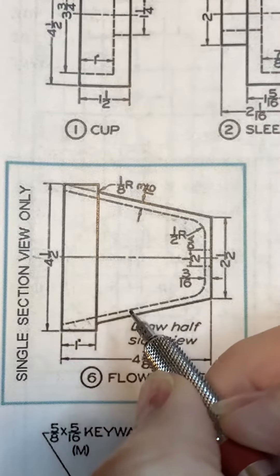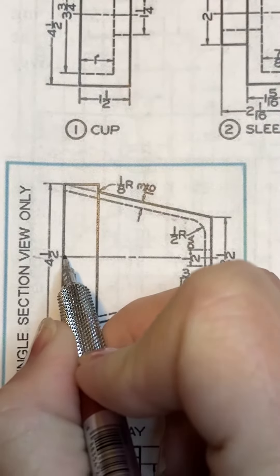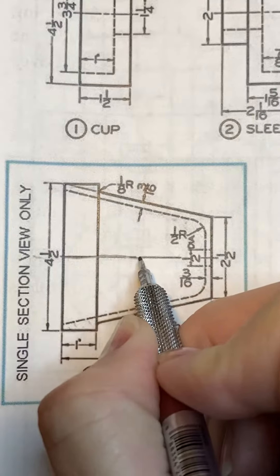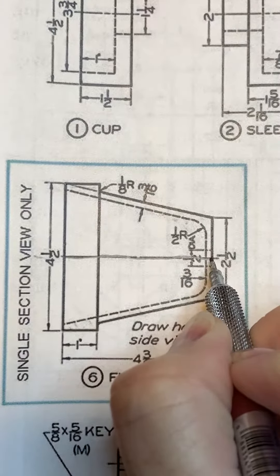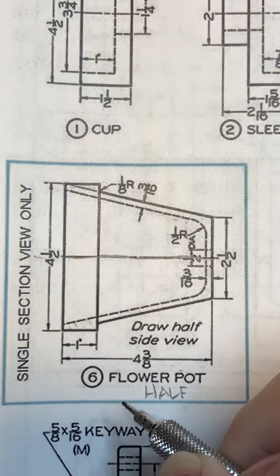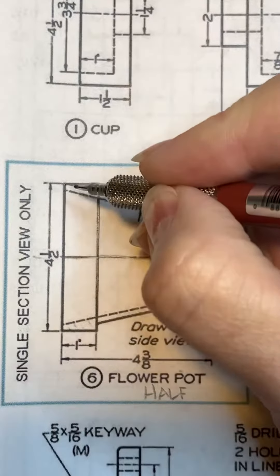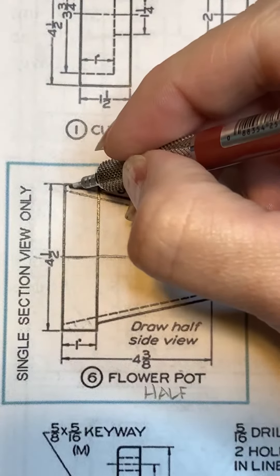So think about what you're going to do with this part. This is going to turn into an object line, right? Because this is going to be a half section, you're sectioning the upper portion of this.